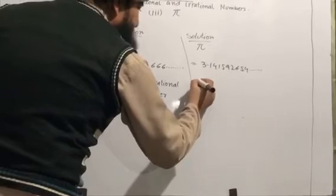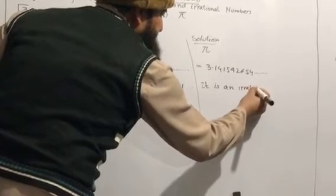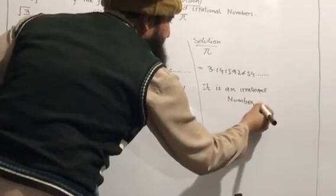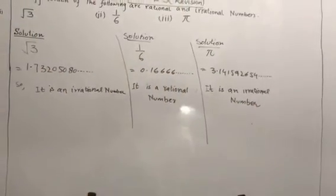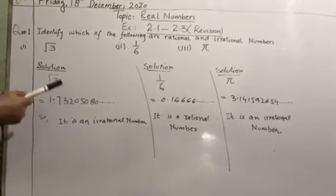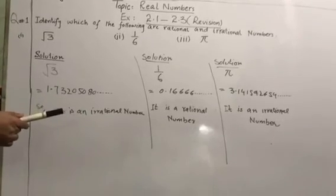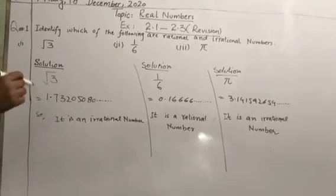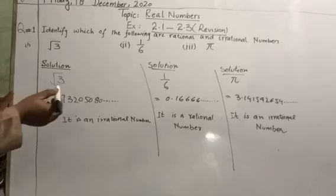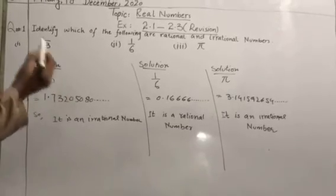Since irrational numbers have two properties — non-terminating and non-recurring — π is an irrational number. In this way you can solve all parts of question number one: if a decimal fraction is non-terminating and non-recurring, the number is irrational; if it is non-terminating but recurring, it is rational; and if the number is terminating, it is also rational.